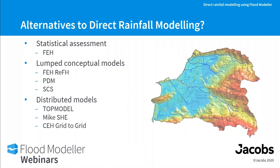It's worth briefly touching on alternative approaches. Statistical methods — such as FEH statistical — work well for historic observed flows to calculate design flows, but they're backwards-looking, can't test NFM or catchment change impacts, and suit large rural river systems. There are also lumped conceptual models like FEH and SCS built into Flood Modeller, which can provide flows and components usable within direct rainfall modelling. Distributed and semi-distributed models such as dynamic TOPMODEL and grid-to-grid are also options to consider.